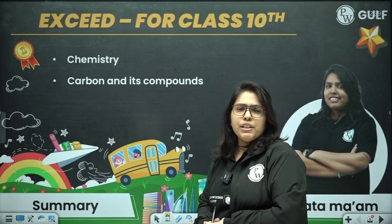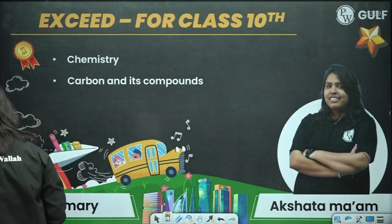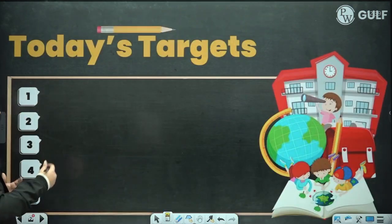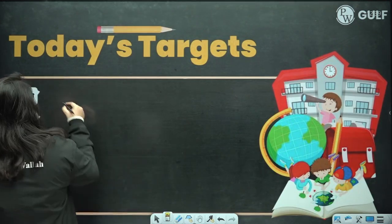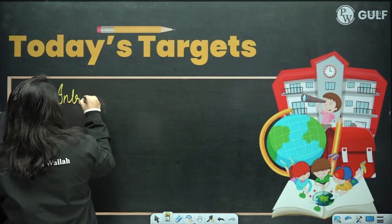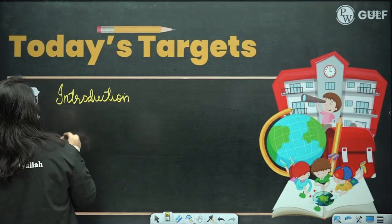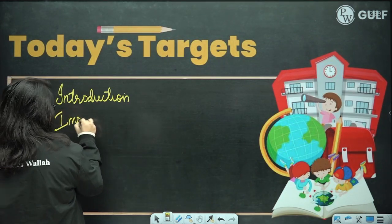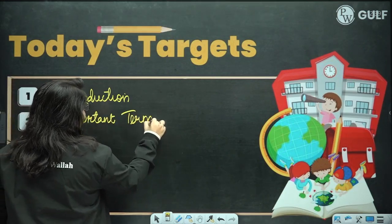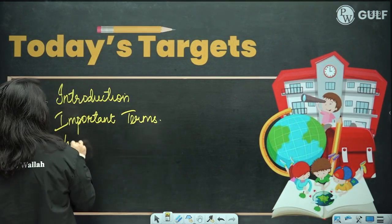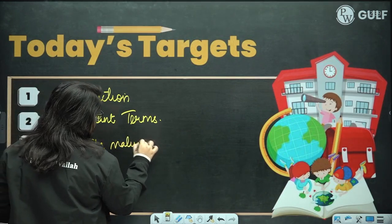What are we going to learn in our chapter today? We are basically going to learn about what exactly carbon is as an element — a brief introduction about carbon. After that, we shall be learning certain important terms, and then we will be learning about the versatile nature of carbon.